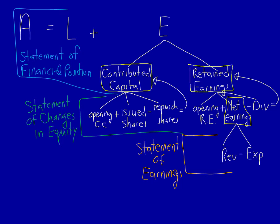That means in order to produce the financial statements, we generally have to produce the Statement of Earnings first, the Statement of Changes in Equity next, and the Statement of Financial Position last. The Statement of Cash Flows is not reflected in this sequence because it does not produce a number used in other statements. Instead, it takes the balance of cash from the Statement of Financial Position and explains exactly what happened to it over time.